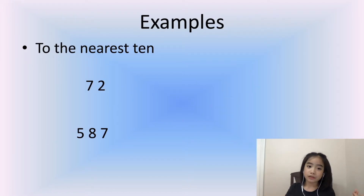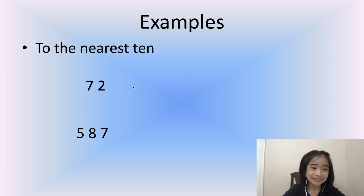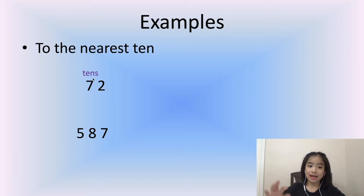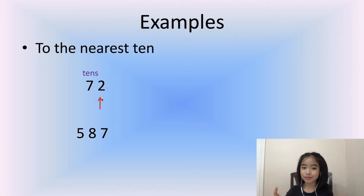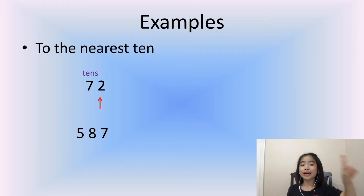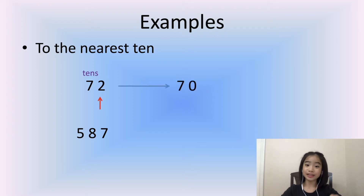Let's do a few examples. Here we need to round to the nearest ten. We have 72. The 7 is in the tens position, and the digit to the right — in the ones position — is 2. Since 2 is in the range 0–4, we round down to 70.